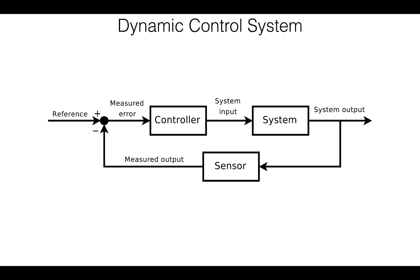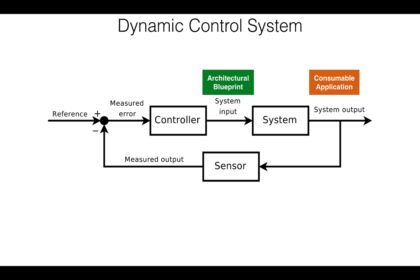In our AC example, that feedback loop is provided by the thermostat. When it detects that your desired temperature has been reached, it feeds that back to the controller, which in turn causes the AC to stop emitting cool air. So what does a dynamic control system have to do with the SMP? Everything, because the SMP itself is a dynamic control system. To be more concrete, the application architecture serves as the input, while a consumable application is the output. It also has a feedback loop that contains more information than a thermostat would — some examples are unit test results, code coverage reports, and other reports.